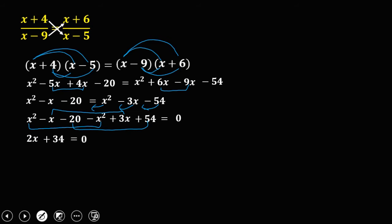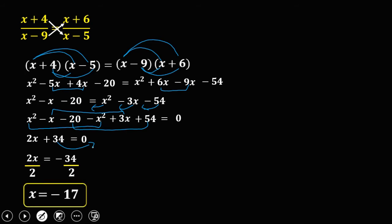Transpose 34 to the right side to solve for x, so that becomes negative 34. Then divide both sides by 2, so x is equal to negative 17.